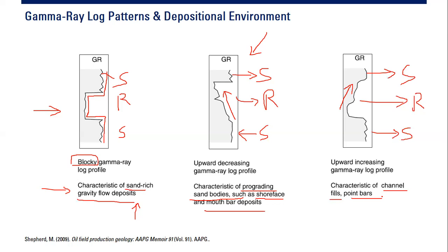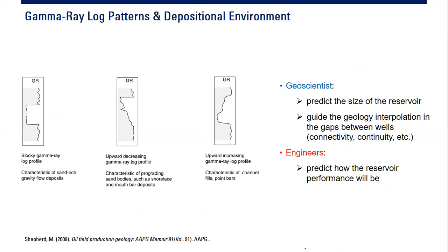We can discuss with our geoscientist friends the significance of these patterns. To simplify: for geoscientists, these patterns can guide them to predict the size of the reservoir. It may not be an exact computation, but it gives an early idea of how big the reservoir will be. From knowing the deposit type — sand-rich gravity flow, shoreface, channel fill, or point bar — they have a first guess whether the reservoir will be big or small, based on the log.